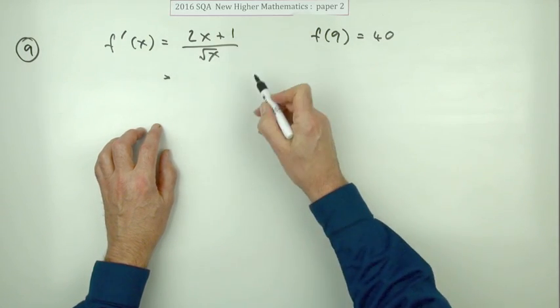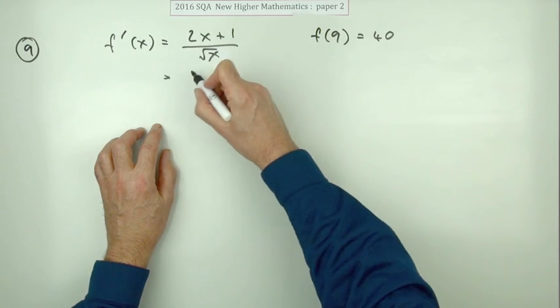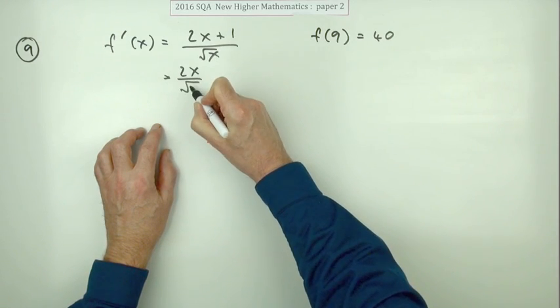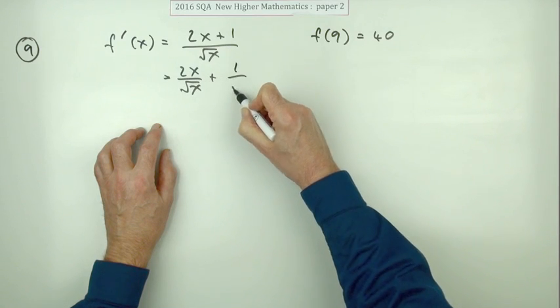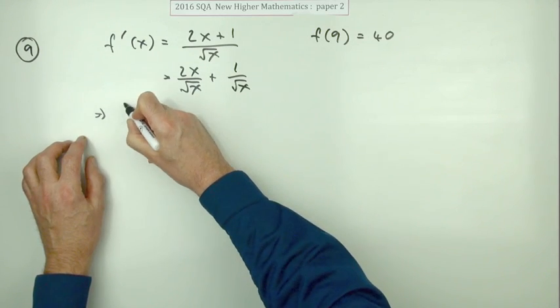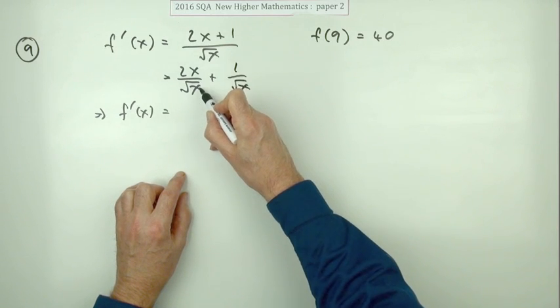You don't need to spell it out but I'll spell it out: it's 2x divided by the root x and one is divided by the root x. So that means f'(x) is actually dividing the terms, subtract the powers.